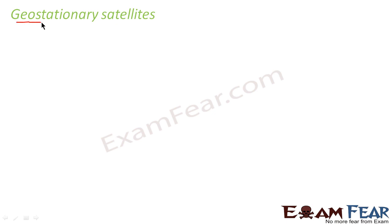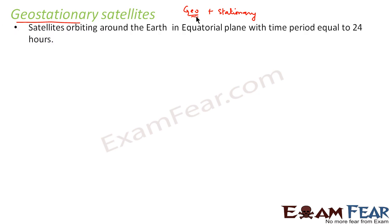Now we will study what are geostationary satellites, because when we are studying things about planetary motion and discussing satellites, it becomes very important to know what a geostationary satellite is. As the name suggests, geostationary — that is geo plus stationary — stationary means something at rest and geo means earth. So a geostationary satellite is a satellite orbiting around the earth in the equatorial plane with a time period equal to 24 hours.